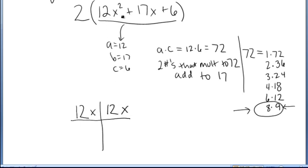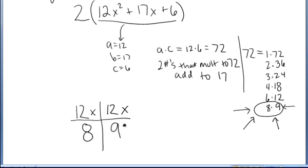My original trinomial was 12x squared plus 17x plus 6. I'm going to create a table with four pieces. The leading term is 12x squared. I'm going to put in the top pieces of my table 12x and 12x — I just copy it. Then I take the two numbers I selected, 8 and 9. I put the 8 in one piece and the 9 in the other piece of the table.